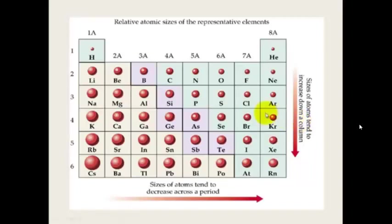So as we go down the group the atomic radius increases, and as we go across the period the atomic radius decreases. Going across on a diagonal angle, you will also see that the atomic radius decreases.